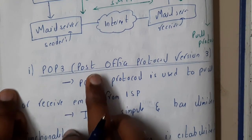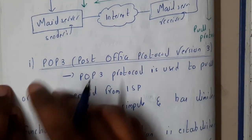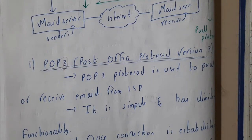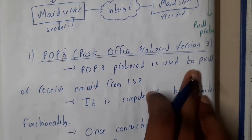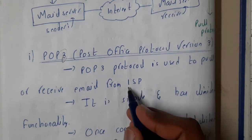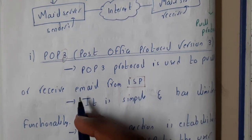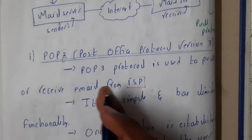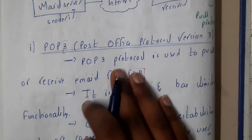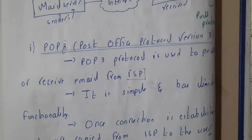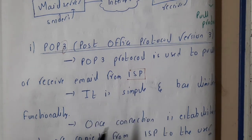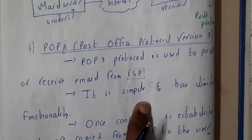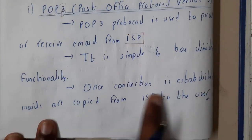POP3 stands for Post Office Protocol version 3, where 3 indicates the version. POP3 is used to pull or receive emails from the ISP — Internet Service Provider. The main drawback of POP3 is that mail is automatically deleted after reading; it is essentially a one-time read option. Once you read the mail, it's gone. It is simple and has limited functionalities, with mail copied from the ISP to the user in a single connection.